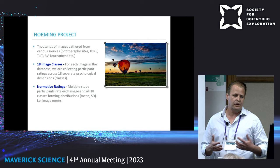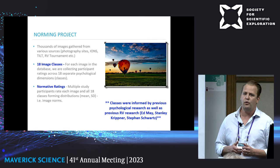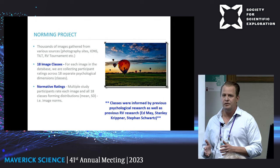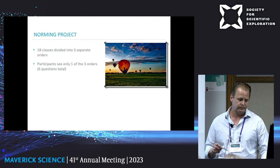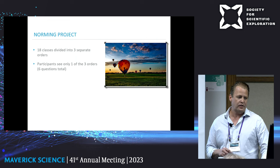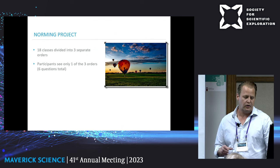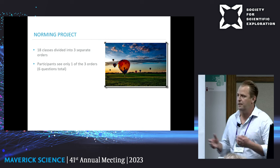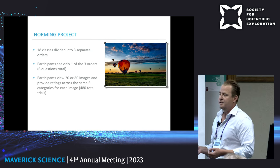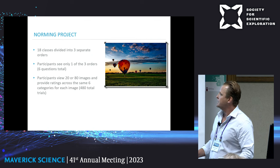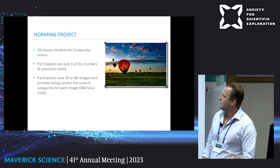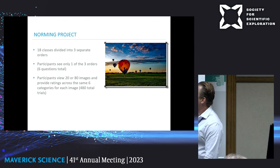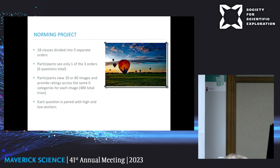Participants, depending on whether they're volunteering or being paid through Amazon Turk, will see either 20 or 80 images. For each image, they'll see six questions and offer a rating. Each question is paired with a high and low anchor point. For example, one class is animacy: 'How alive does the scene depicted in this image feel?' Images with a high rating depict scenes with a sense of life force; images with a low rating feel primarily inanimate.